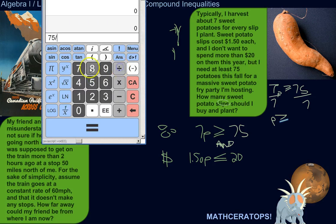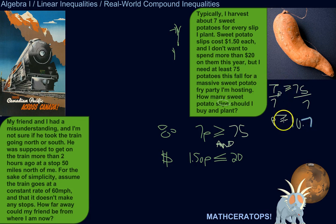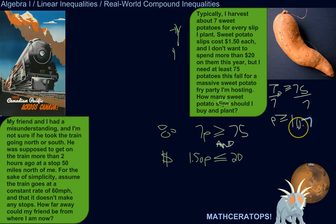I'll just divide: 75 ÷ 7 ≈ 10.7. So in order to get at least 75 potatoes, I need to plant greater than or equal to 10.7 slips — so at least 11.